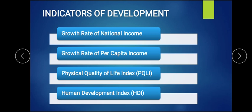Growth rate of national income talks about how national income is growing. National income is the total production of goods and services by the citizens of a particular country over one year or a particular period of time. If production remains constant every year, there is no growth rate. If there is an increase in production every year, we can say there is a growth rate of national income.